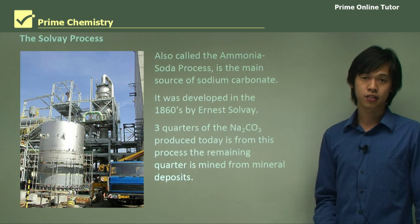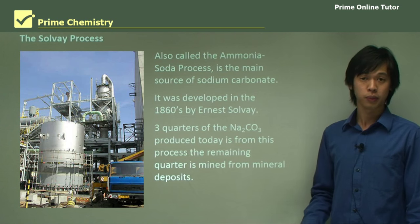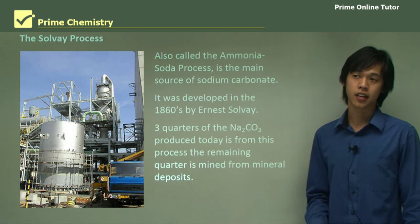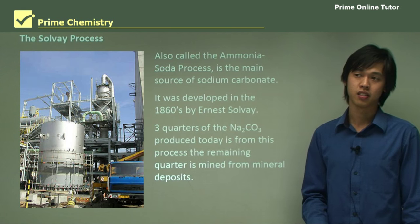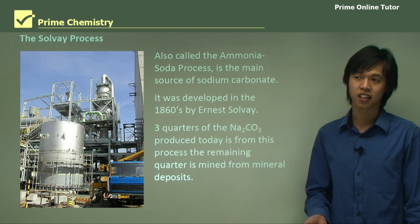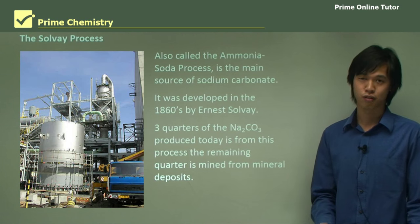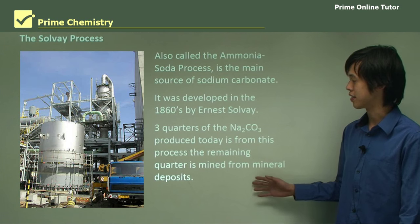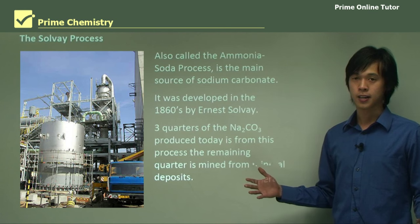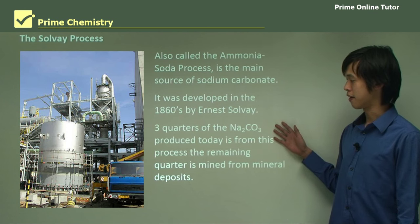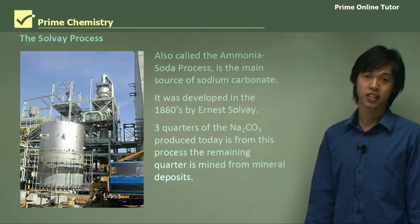When you consider all industrial processes, the only one that comes close to this would probably be the Haber process — about half of the ammonia produced in the world is produced by the Haber process, and the other nitrogen taken out of the atmosphere is done through natural processes. So this is a huge process, responsible for more than three quarters of world sodium carbonate production.